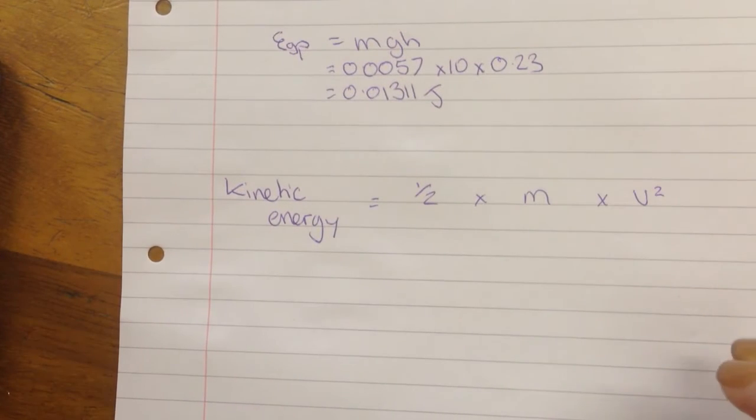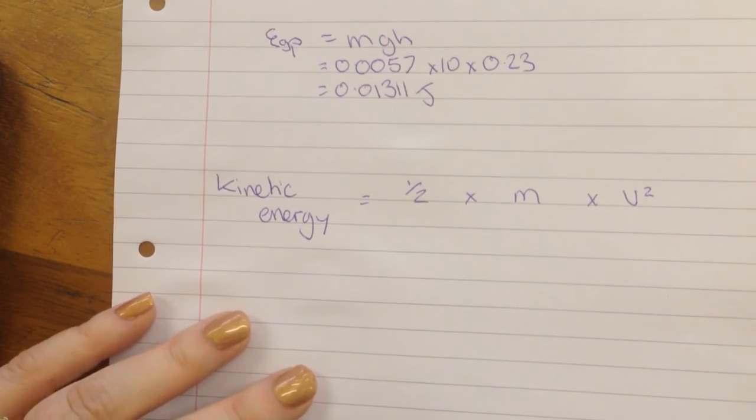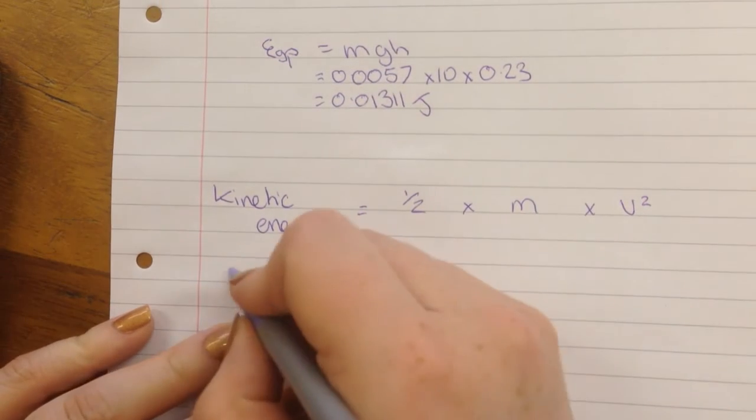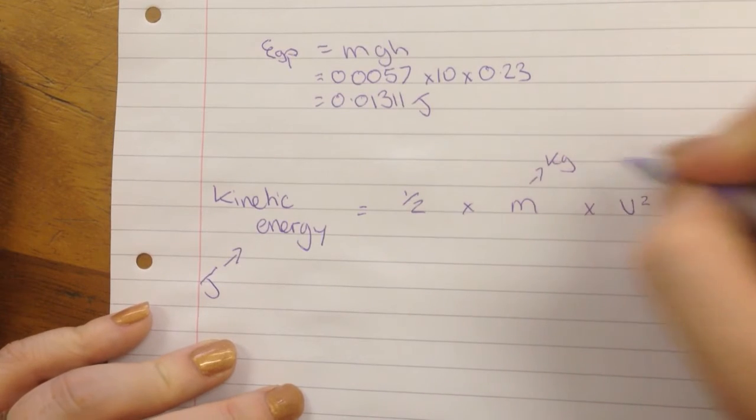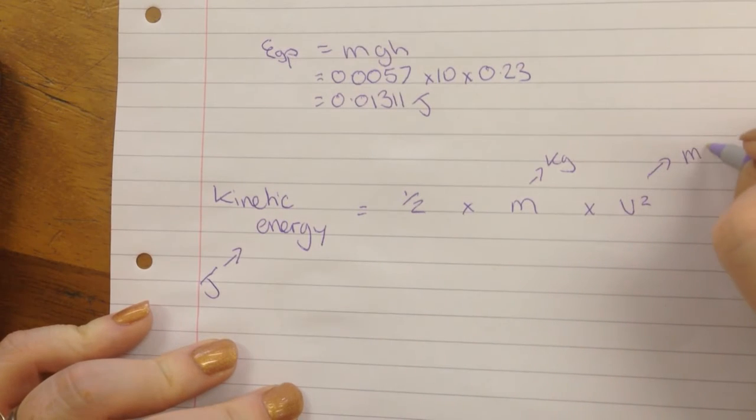We can take that information. Pop it into our equation for kinetic energy. And we can work out that velocity. So this is our kinetic energy in joules. Half is just half. Mass again is in kilograms. And velocity squared is going to be in metres per second.